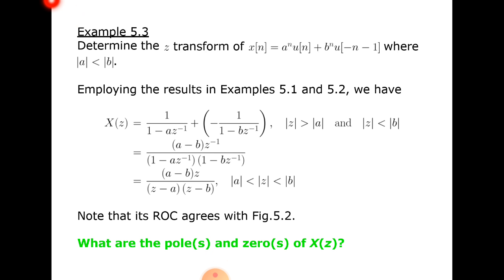Employing the results in examples 5.1 and 5.2, we have X(z) equal to 1 divided by (1 minus a·z^(-1)) plus 1 divided by (1 minus b·z^(-1)), where modulus of a is greater than modulus of a and modulus of z is less than modulus of b. Simplifying, we get (a minus b)·z divided by (z minus a)(z minus b), where modulus of z is less than modulus of a, which is less than modulus of b.